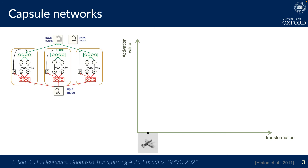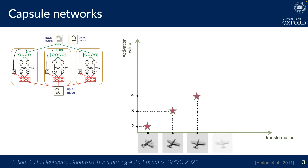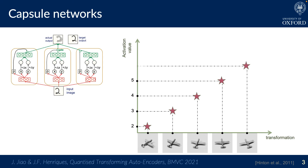Here's an example. Input and output pairs of images related by rotation are given, and one activation is perturbed by its rotation. To achieve a low reconstruction error, the network learns a linear relationship between the input image's rotation and this activation value.